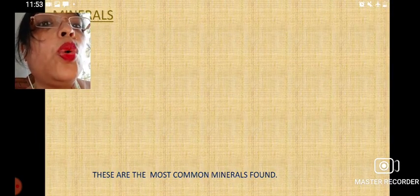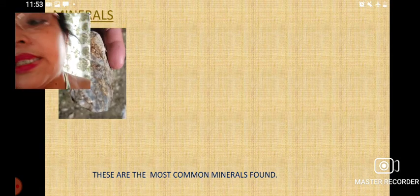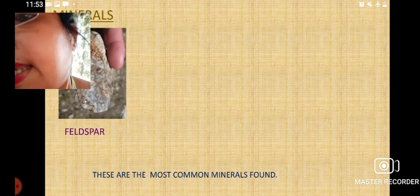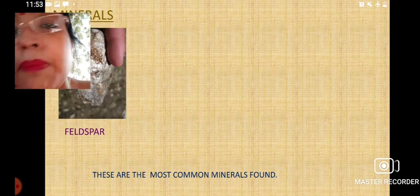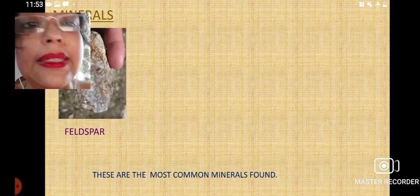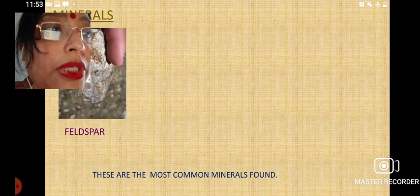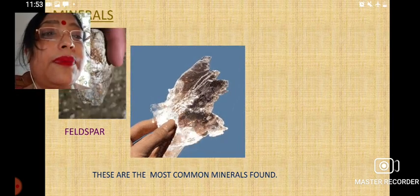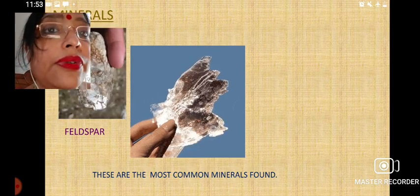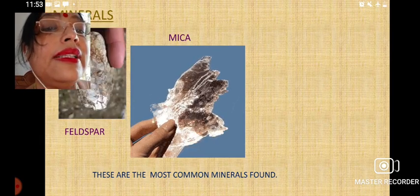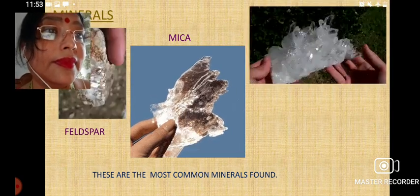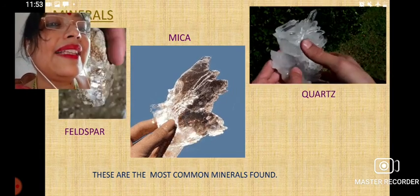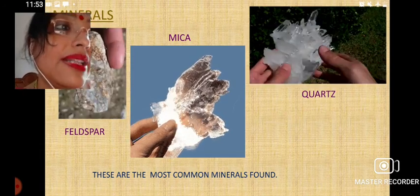Examples of metallic minerals are gold and diamond. The rocks from which metals can be extracted are known as ores of the minerals. Here you can see some pictures of minerals like feldspar, mica, and quartz — these are the most common minerals found.